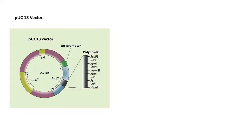Hello guys, welcome to my YouTube channel. Today we are going to discuss the PUC18 vector. PUC18 is one of the most commonly used vectors in genetic engineering to generate recombinant DNA molecules. We have already discussed the PBR322 vector in our previous video, so if you haven't watched that, I request you to go and watch it as well.